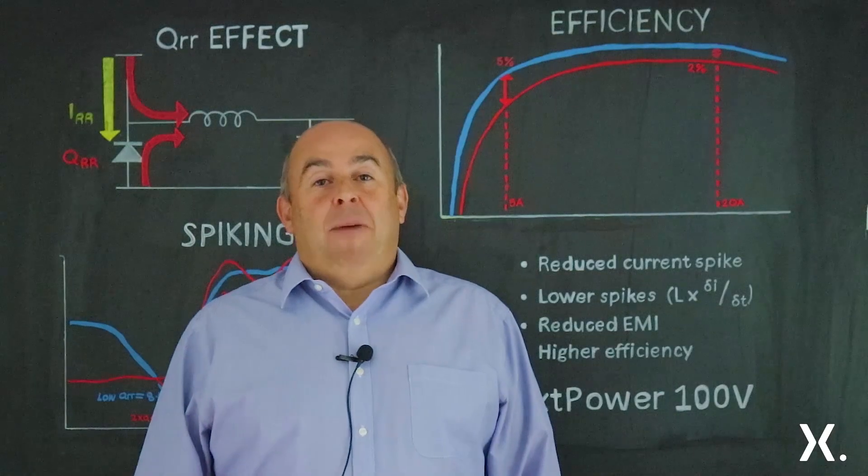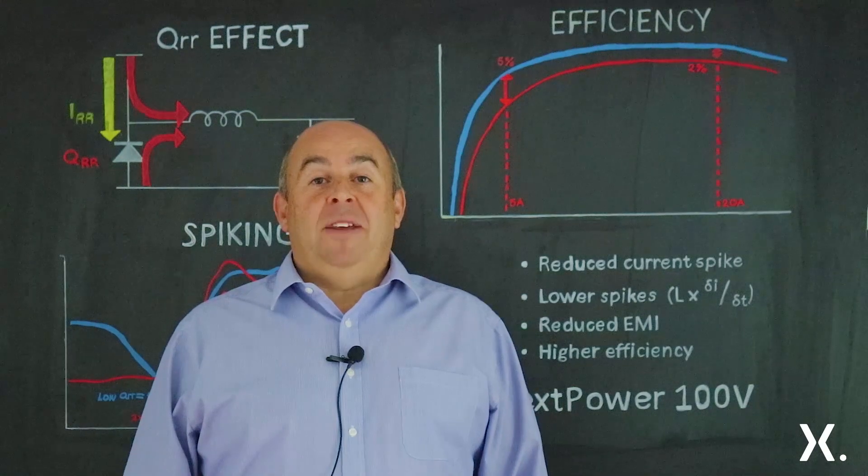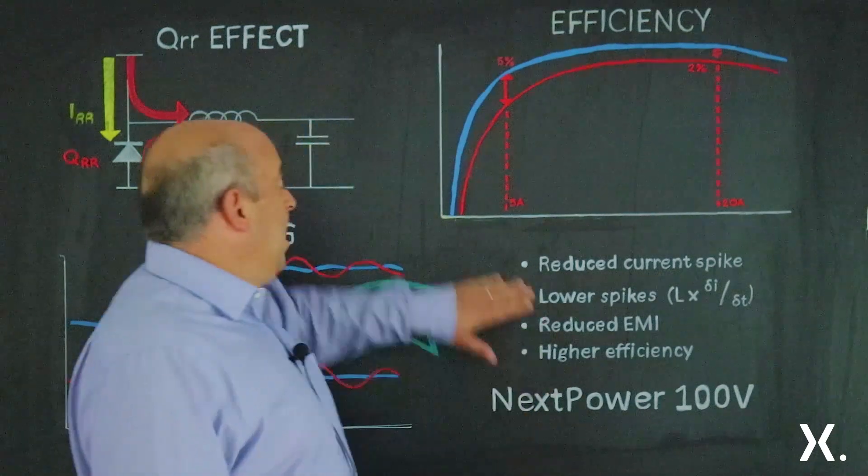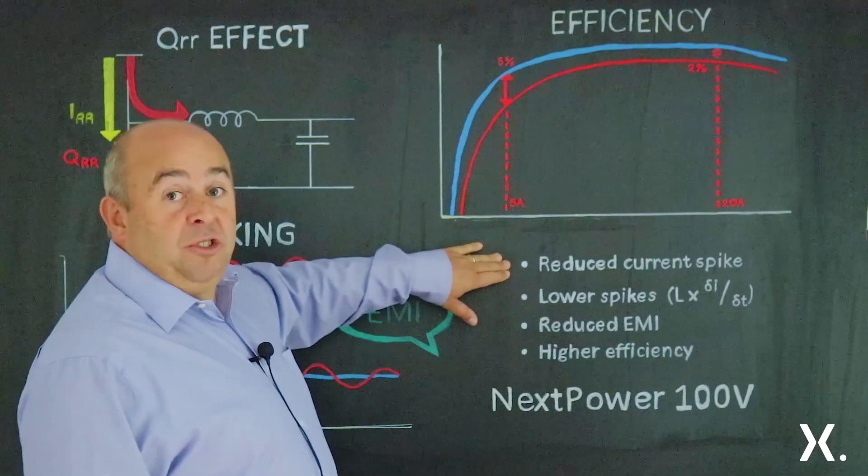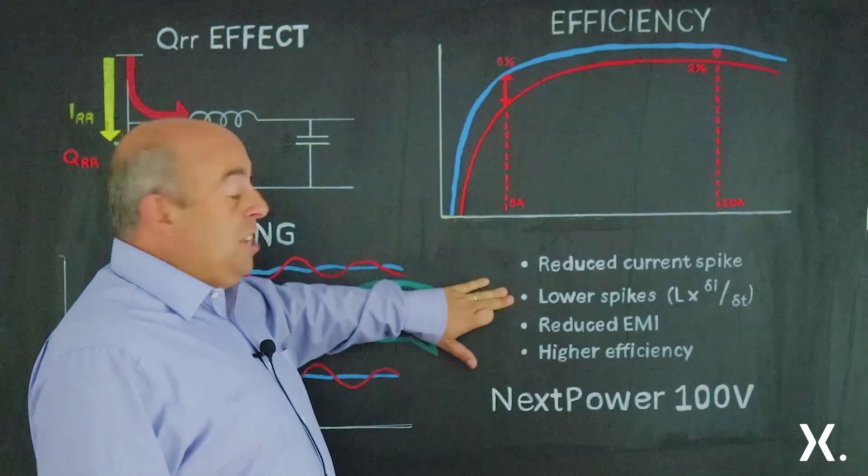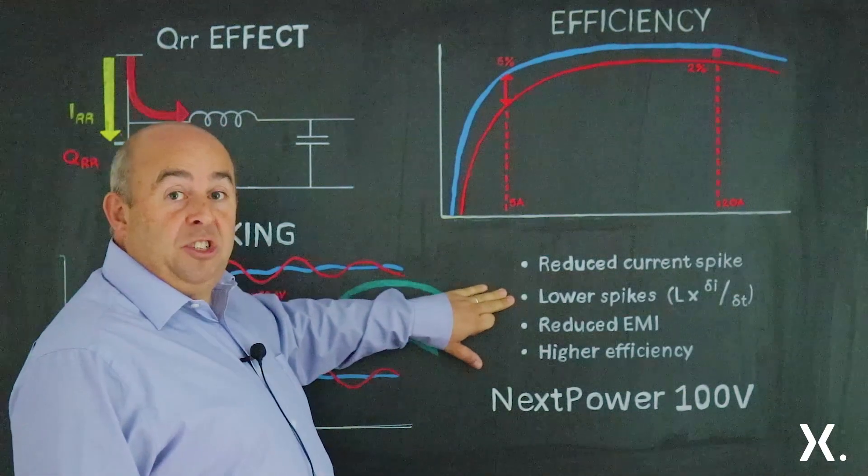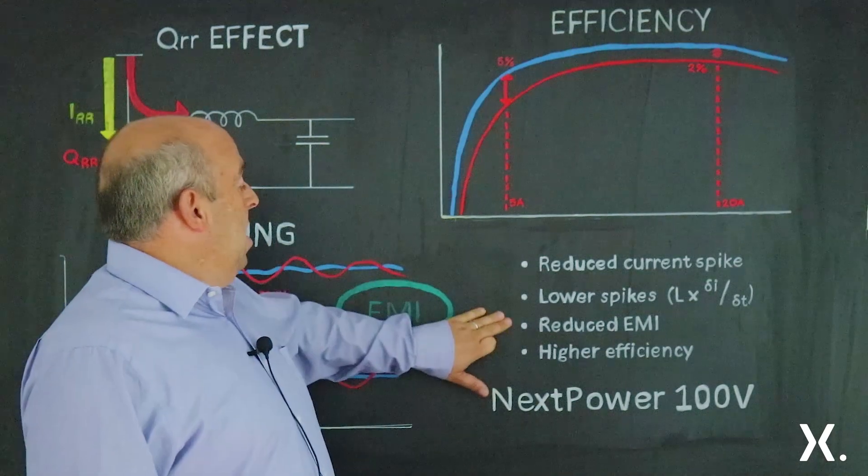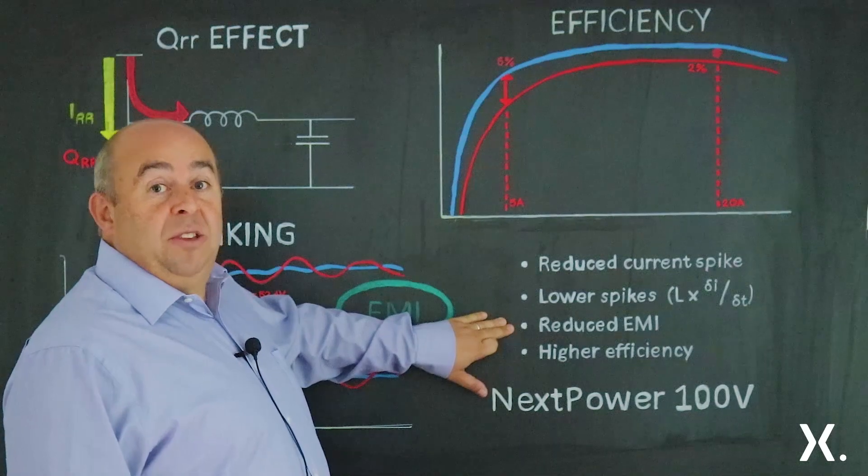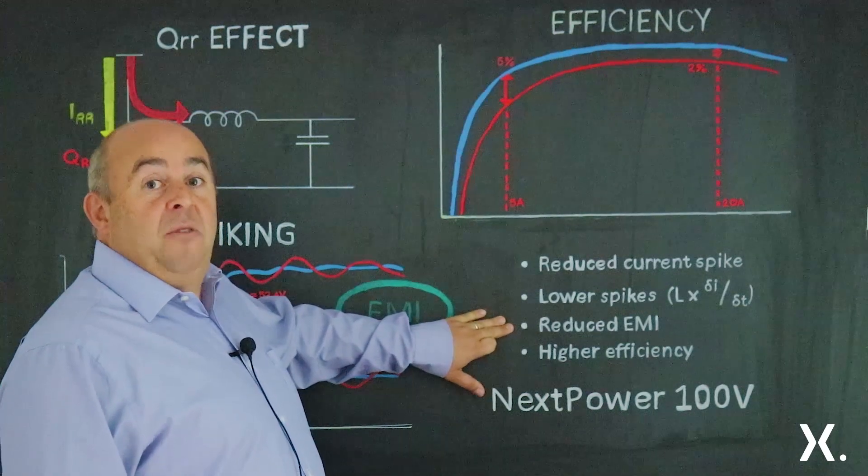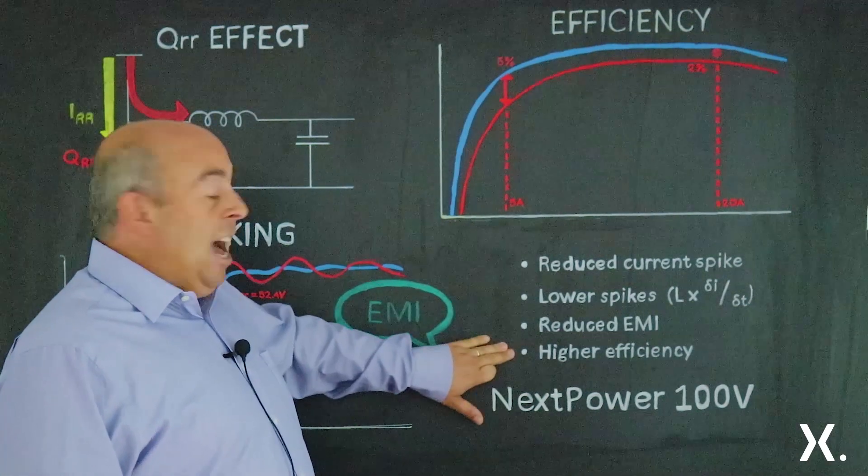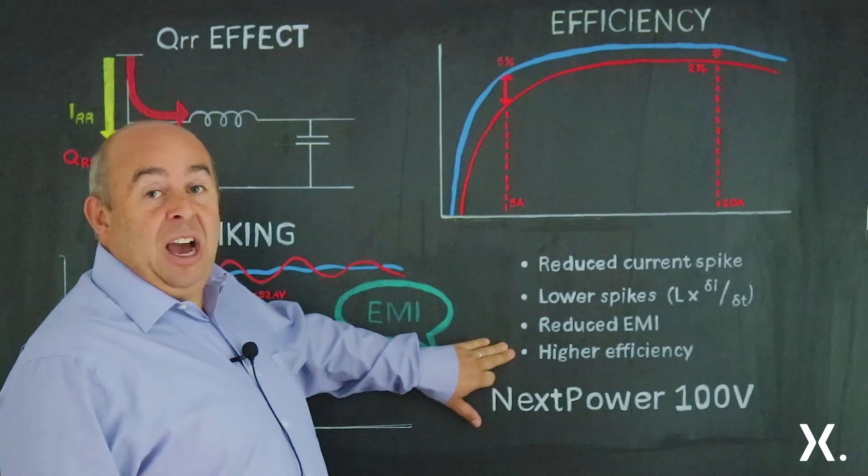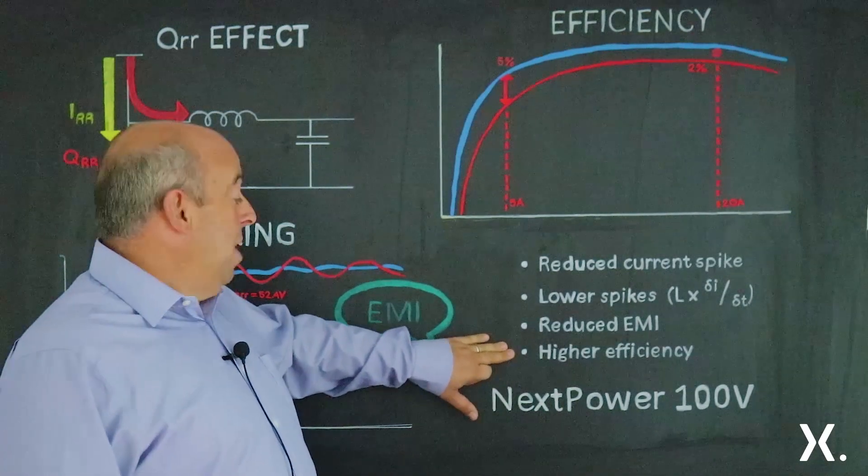To recap, low QRR MOSFETs offer a number of benefits in your application including reduced current spiking which gives rise to the voltage spikes that you see in your application. Ultimately, this helps to reduce the EMI emissions from your product and also gives higher efficiency in your application.